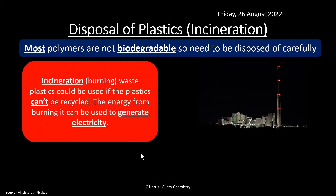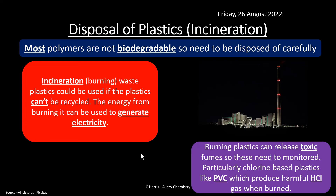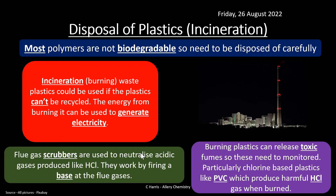Another way of getting rid of plastics is through incineration — burning them. This can be beneficial because the energy released can be used to generate electricity. The downside is pollutants: burning plastics releases toxic fumes that must be monitored, collected, disposed of, or neutralized. For example, burning PVC can produce HCl gas, which is acidic and dangerous. In industry this is more controlled — flue gas scrubbers can neutralize acidic gases produced, for instance by firing a base at the acidic gases from burning PVC.